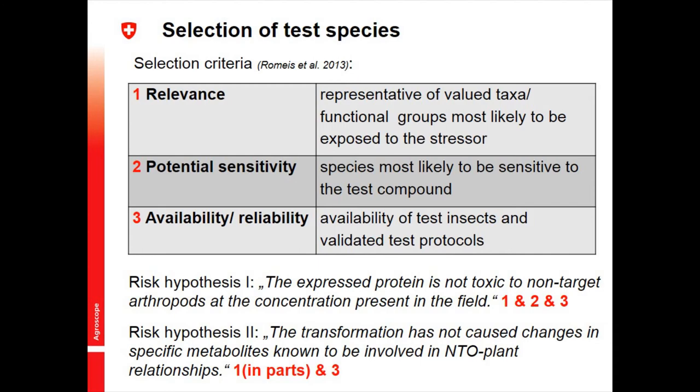If we think about the second hypothesis — regarding unanticipated unintended effects that we haven't characterized and don't know exactly — we largely rely on just the third criterion: test what you can test. I don't feel very comfortable with that. Together with all the other concerns I've shown — not knowing which plant variety or which plant part to test — I'm pretty concerned whether these studies do us any good or add any certainty to the assessment.